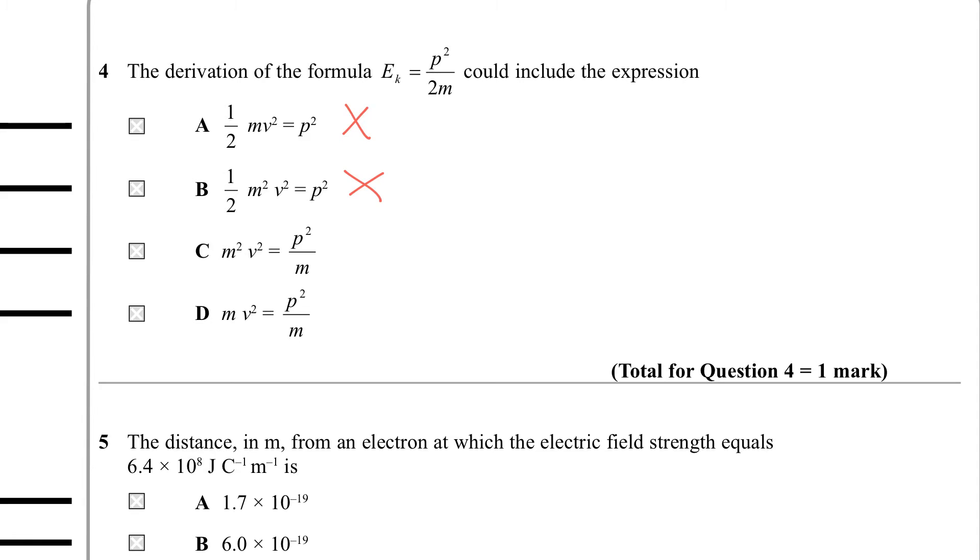p squared over m equals m squared v squared. Again, that's dimensionally incorrect. The units don't match up. p squared - if you took this m back up, you would get m squared v squared equals p squared. So that makes some kind of sense. So that will be the one we're looking for.